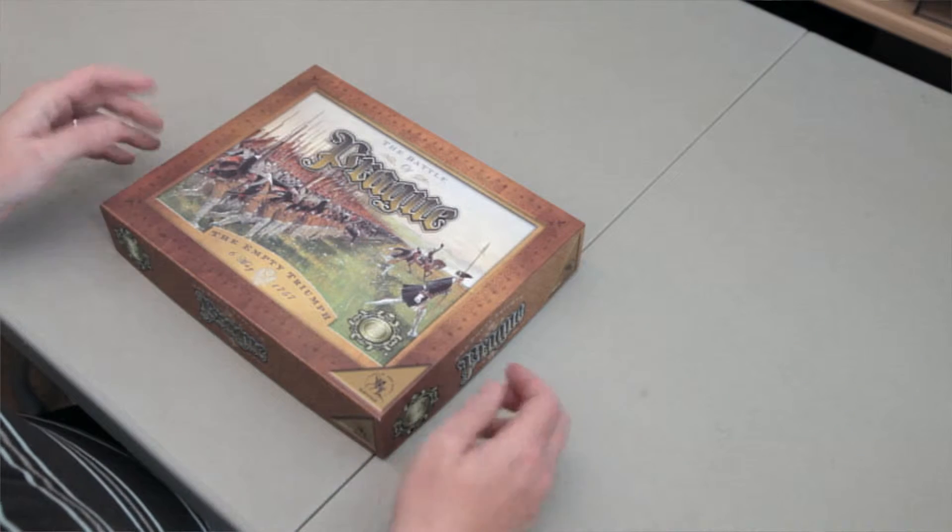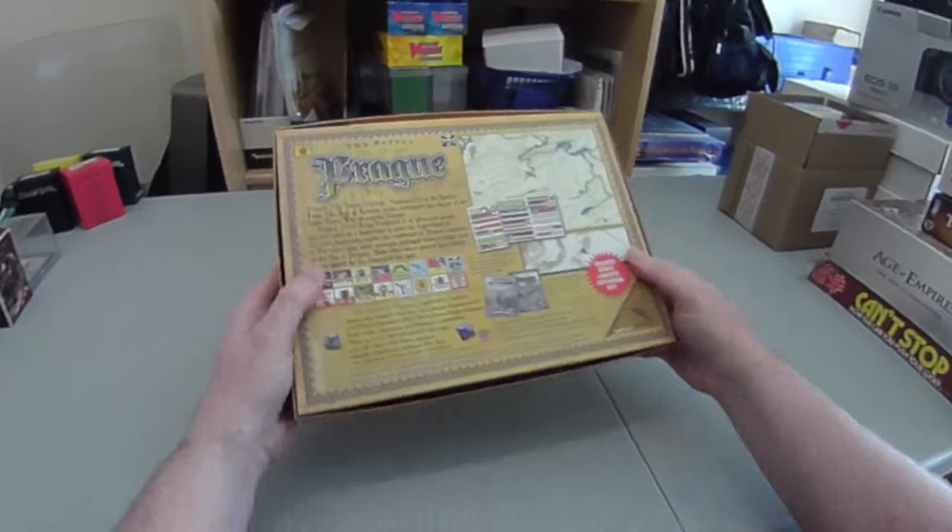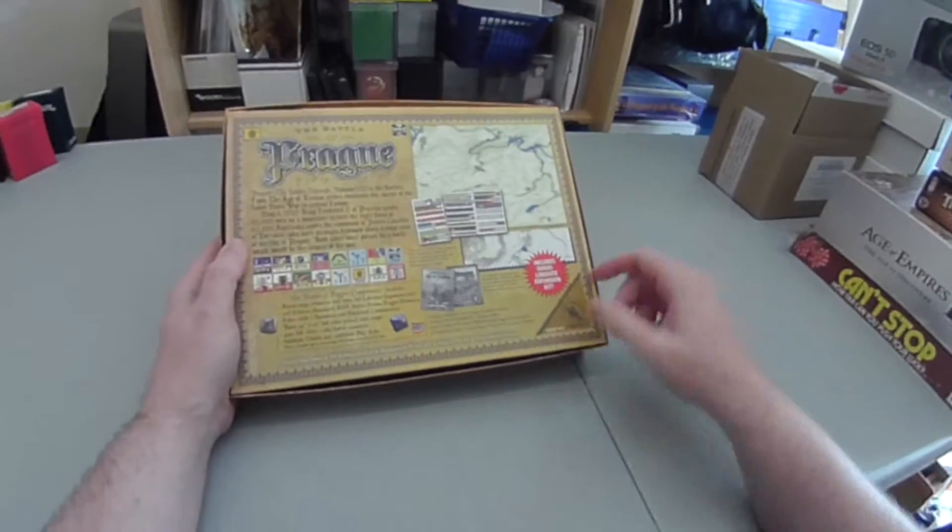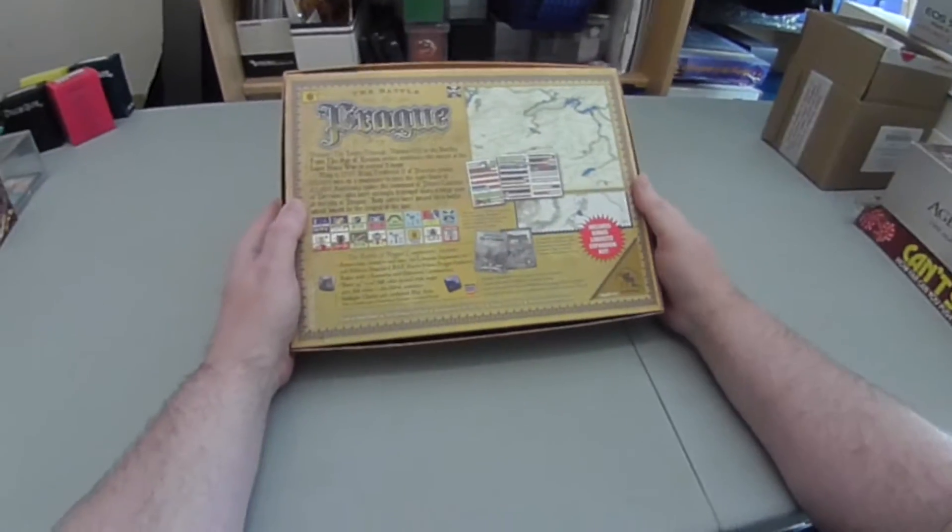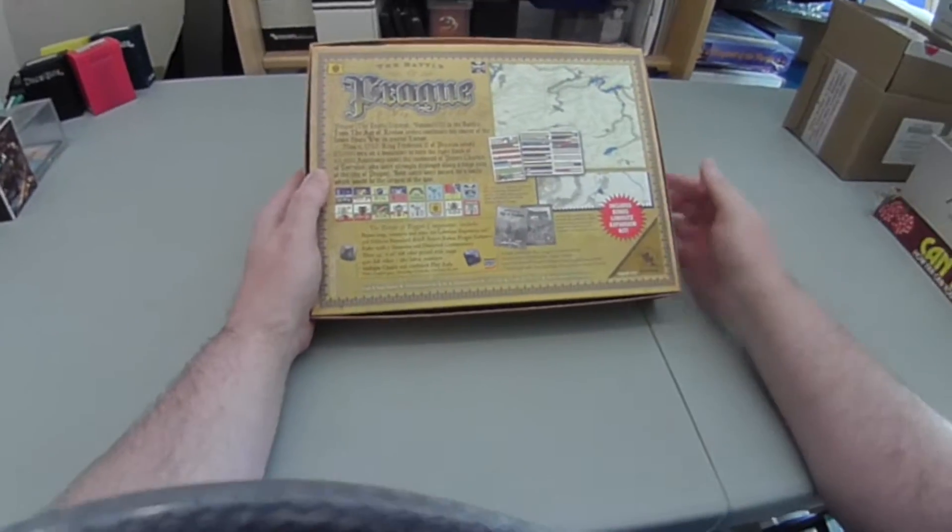Quite an attractive box with a period picture on the front. Have a look at the back, nice color pictures of the counters, maps, and the Lobositz extension map. Quite nicely done, printed in the USA.